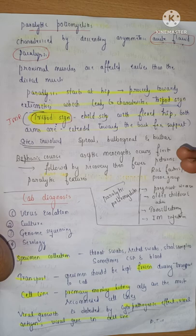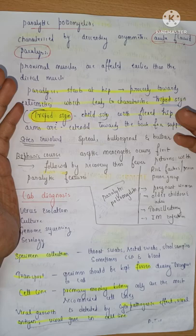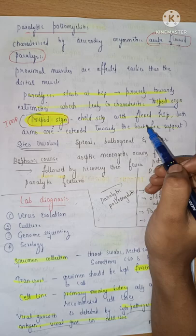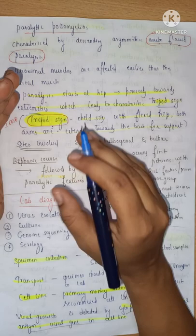If the child sits with flexed hip and both arms extended towards the back for support, that is called the tripod sign. Usually the child suffering from polio has paralyzed lower extremities and hip, so whenever that child sits they sit in a flexed-hip position with arms extended backwards for support. This sign is called the tripod sign and it is very important.